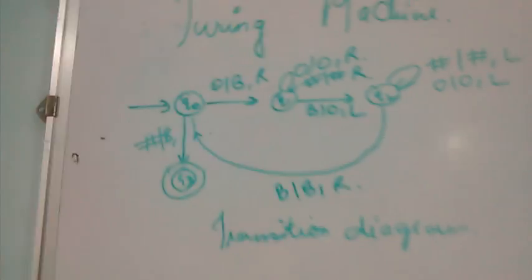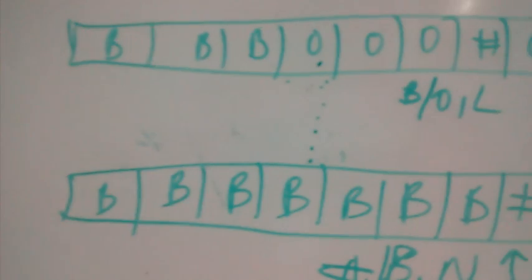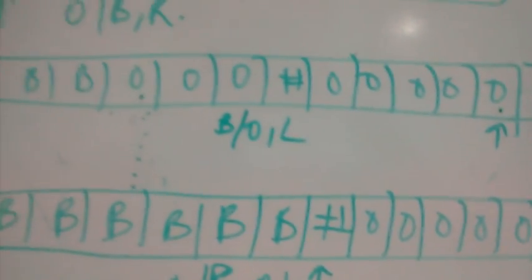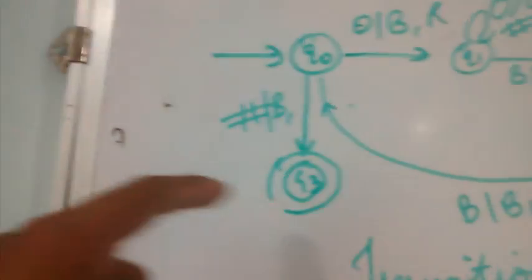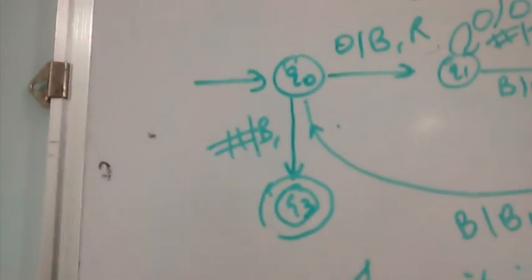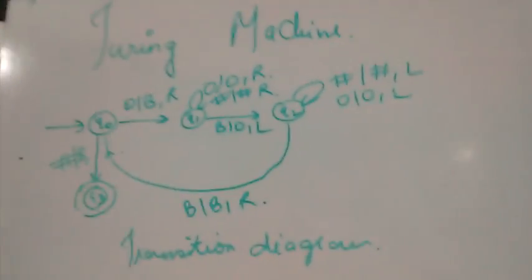At the end we reach a situation where all the zeros on the left side are replaced with blank and only the hash remains, separating the left and right zeros. We then replace that hash with blank — q3 is our final state. We have copied the left number to the right, effectively adding the two numbers. That's it for today, thanks for watching — please subscribe.